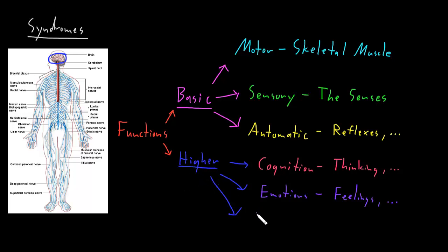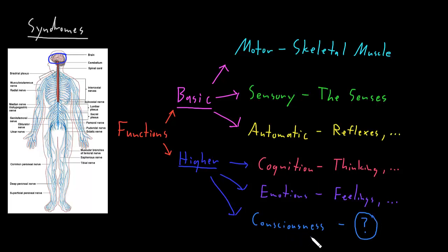The last category under the higher functions of the nervous system is consciousness. Consciousness is a really tough word to define. The best I can come up with is that consciousness is related to the awareness of being a person, of experiencing one's life, and controlling one's actions. While there's a lot we don't understand about most of these functions, consciousness is the one we know the least about, and many researchers are working to understand how this phenomenon is created by the nervous system.